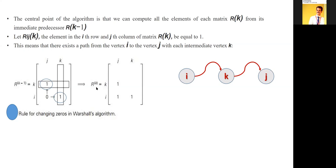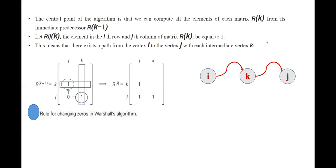Let r_ij at the k-th stage be the element in the i-th row and j-th column of matrix R^k. Let it equal 1. This means there exists a path from i to j with each intermediate vertex numbered up to k. For example, if there is an entry from i to j equals 1, they may be connected through an intermediate vertex k.